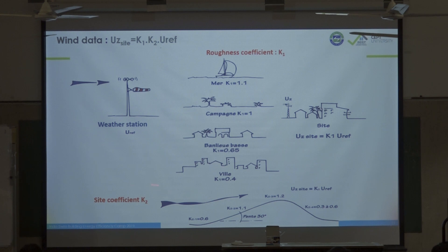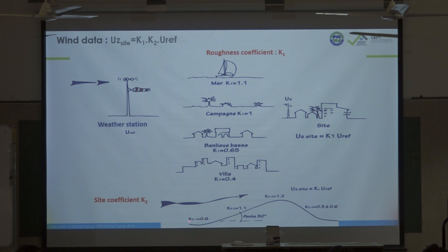Then you have a site coefficient k2 for topography — if you are uphill, downhill, or at the top of a hill. For instance if you are in a dense area and the town is located downhill, you multiply 0.4 by 0.6, meaning the wind potential is very low.